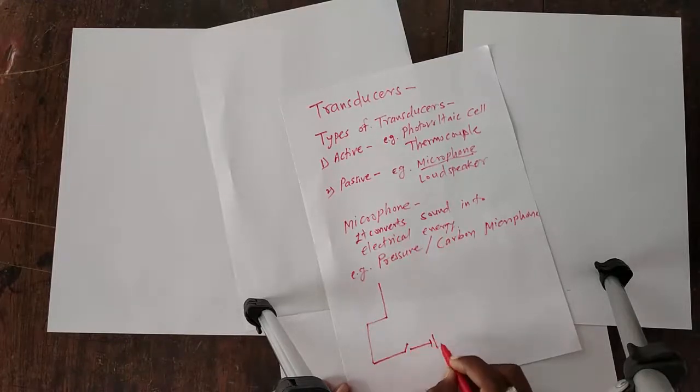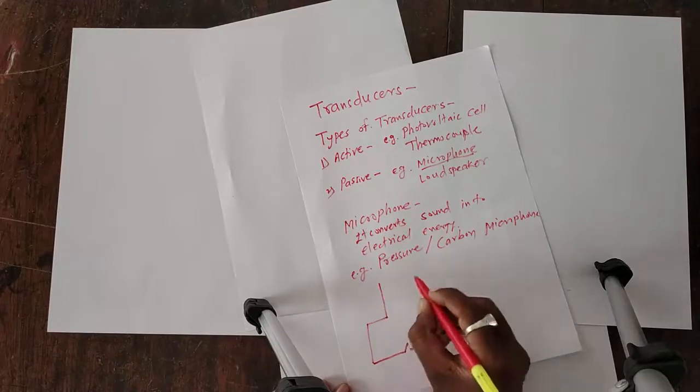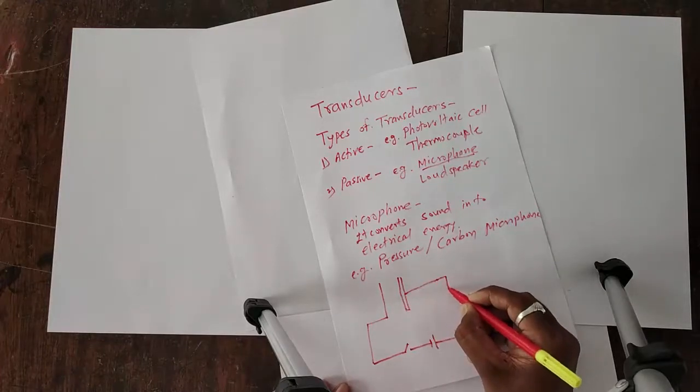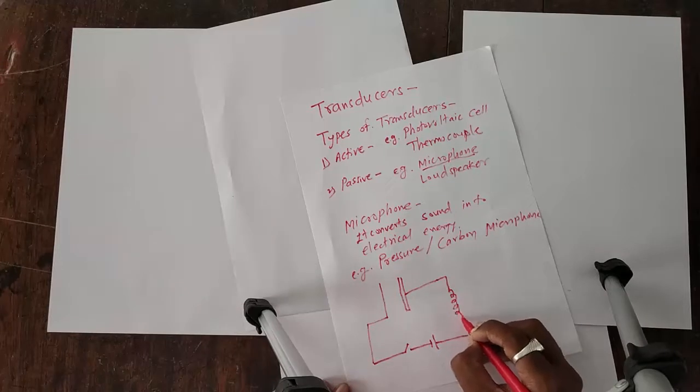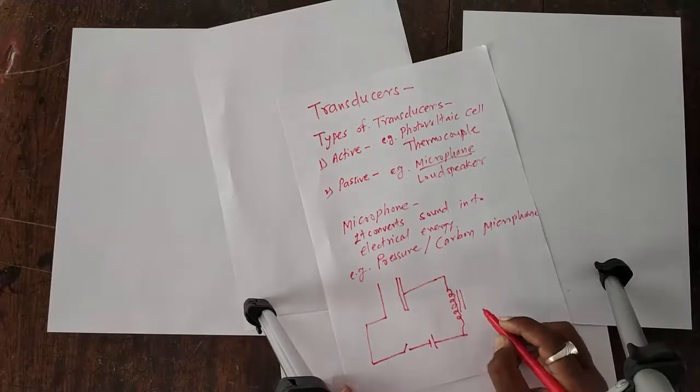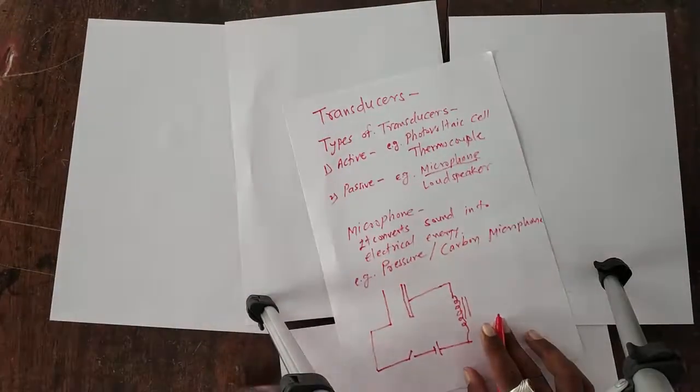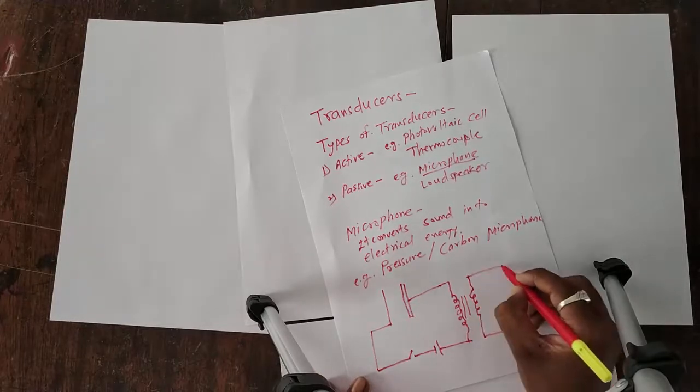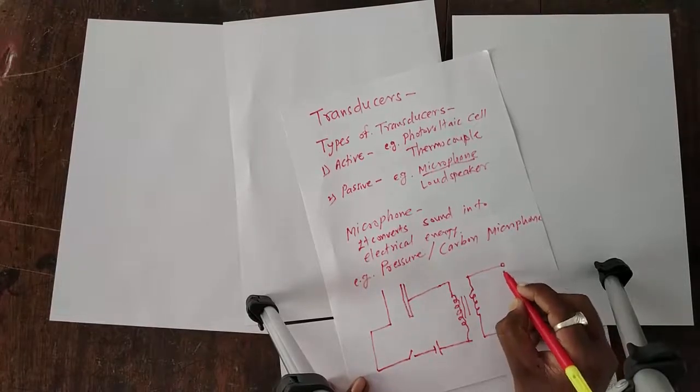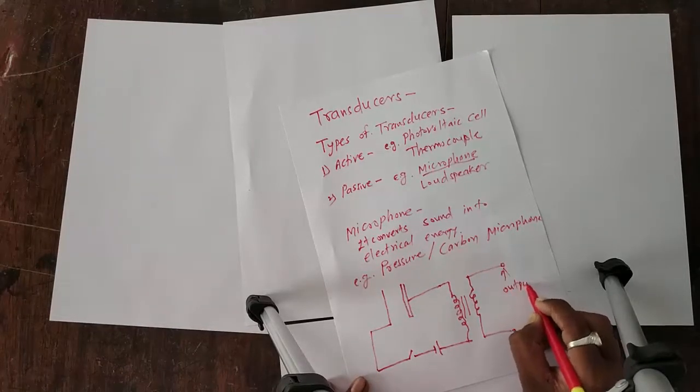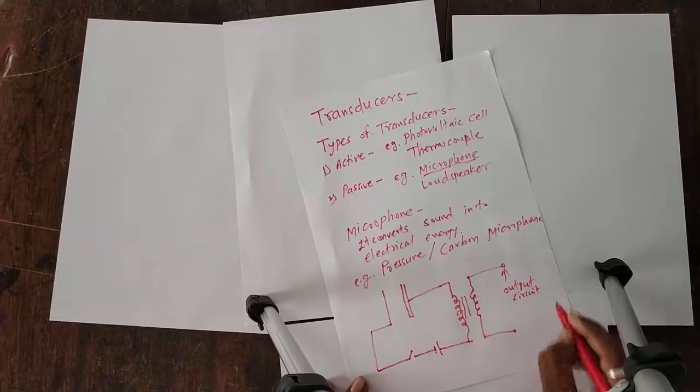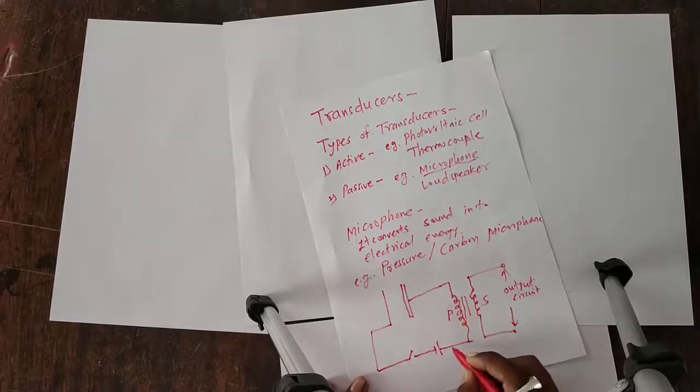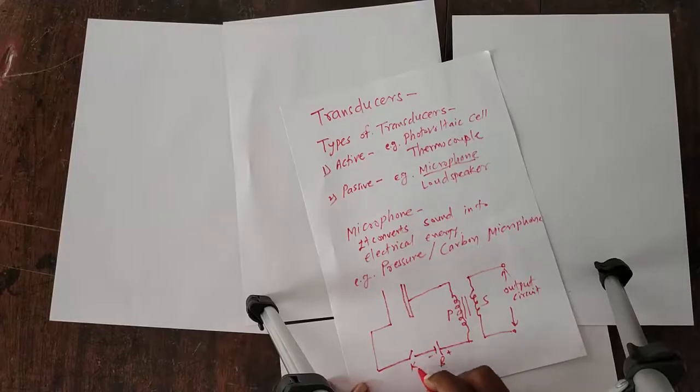First, the diagram is sketched. In this diagram, one plate P1 and another plate P2 are connected in series. In this series circuit, a key is inserted. Battery negative is connected to plate P1 and battery positive is connected to a primary coil of the transformer. The secondary coil of the transformer is connected to the output circuit.